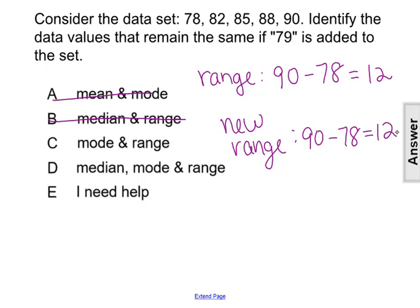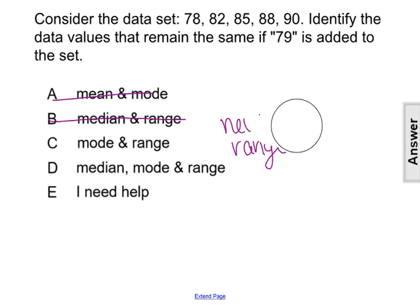That's good. Choice C and D, so far we have the mode is the same and the range is the same. The last piece is to just see what happens to the median.